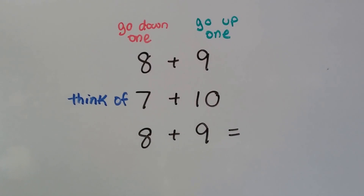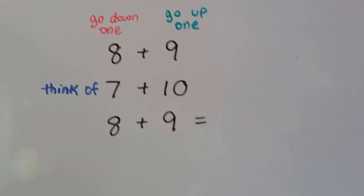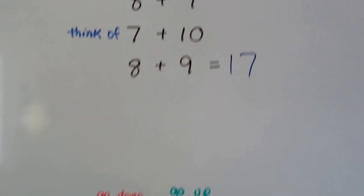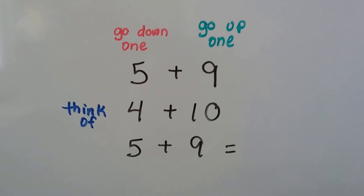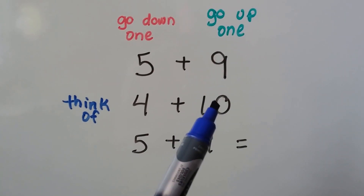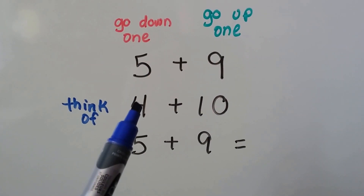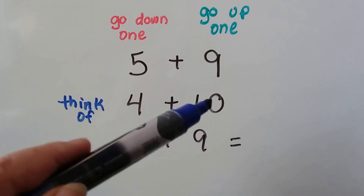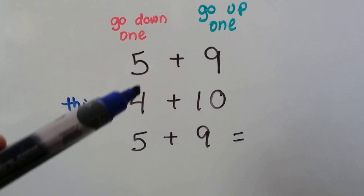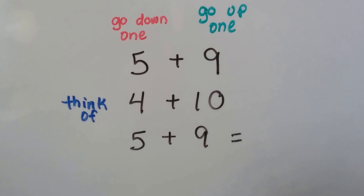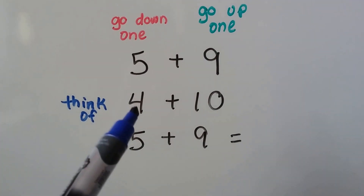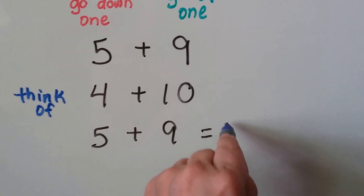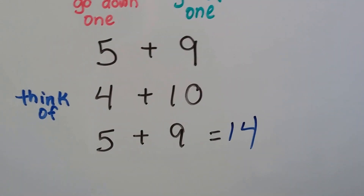7 plus 10 is 17. Let's try it again — we have 5 plus 9. The 9 is going to go up by 1 and the 5 is going to go down by 1. The 5 is going to give 1 of its counters to the 9 to make a 10, and now it's a 4. 4 plus 10 is 14 — that's a lot easier than 5 plus 9, isn't it!